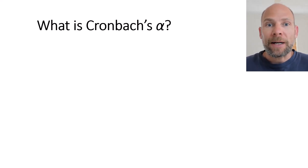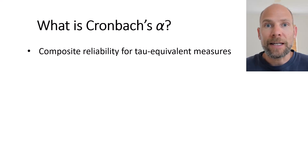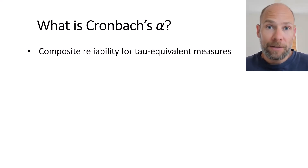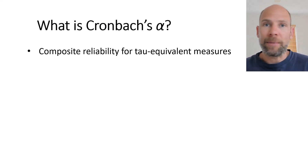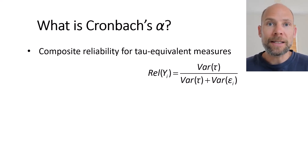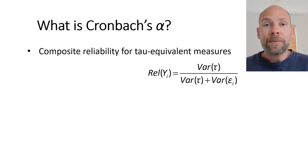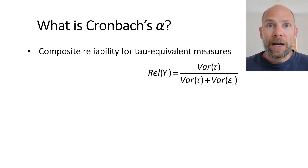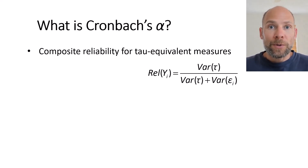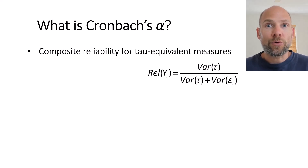Conceptually, what is Cronbach's alpha? Cronbach's alpha is a coefficient that measures composite reliability for tau equivalent measures. This contains a whole bunch of concepts we need to break down, so let's start with reliability. Reliability is an index derived from classical test theory that allows us to measure the precision of measurement in the social sciences when you have tests or questionnaire scales and you want to know how much measurement error is in your observed test scores.